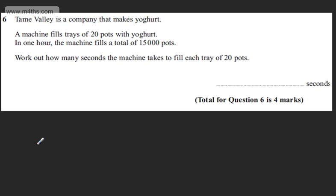This is question number six and it carries four marks. We're told Tame Valley is a company that makes yogurt. A machine fills trays of 20 pots with yogurt. In one hour, the machine fills a total of 15,000 pots. We're asked to work out how many seconds the machine takes to fill each tray of 20 pots.